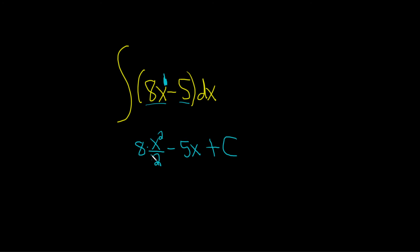So now we just cancel the 2. That goes into the 8 four times. And so we get 4x squared minus 5x plus our constant of integration, capital C.